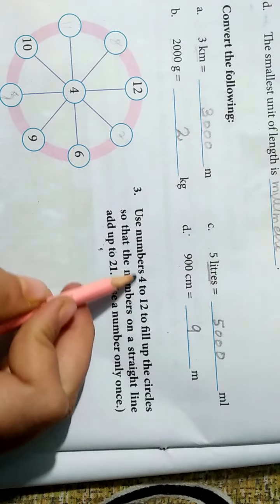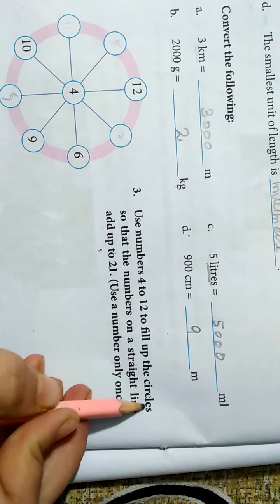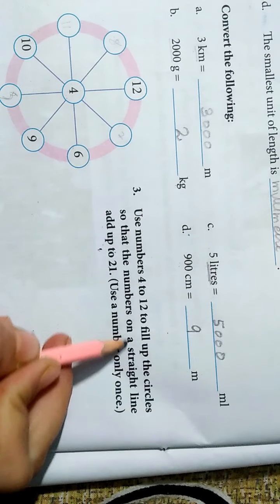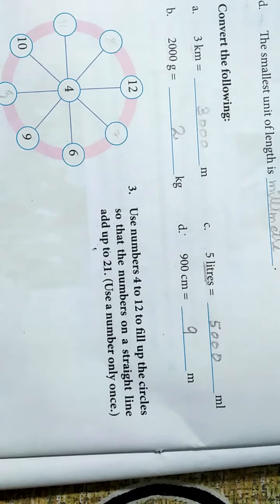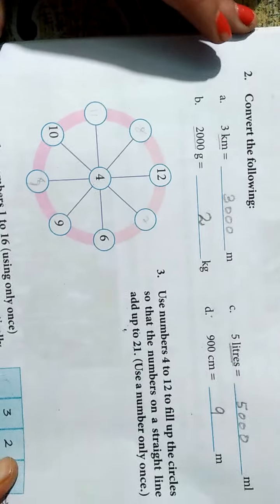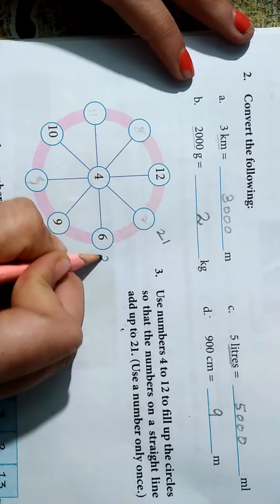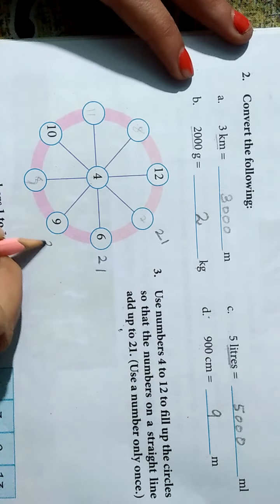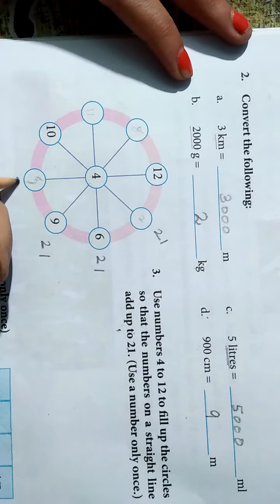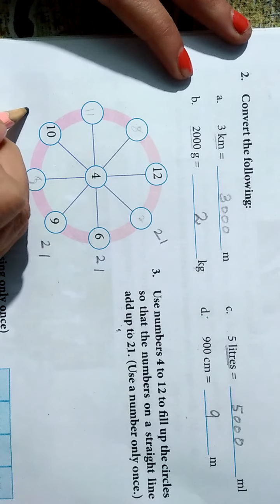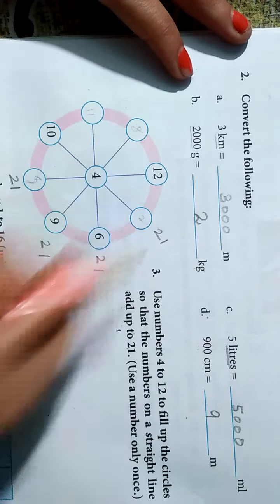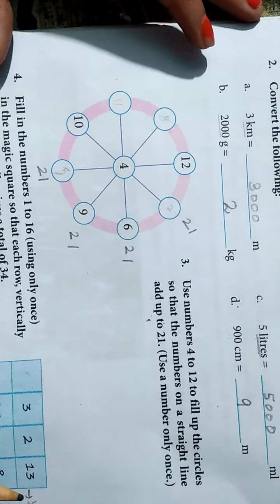Now next. Use the number 4 to 12 to fill up the circle so that the numbers on a straight line add up to 21. Inka bolna ka matlab mere bacche, jab aap aise add karoge tab bhi 21 aana chahiye. Yahaan se yahaan ko add karoge tab bhi 21. Saree taraf 21 aana chahiye. Clear?